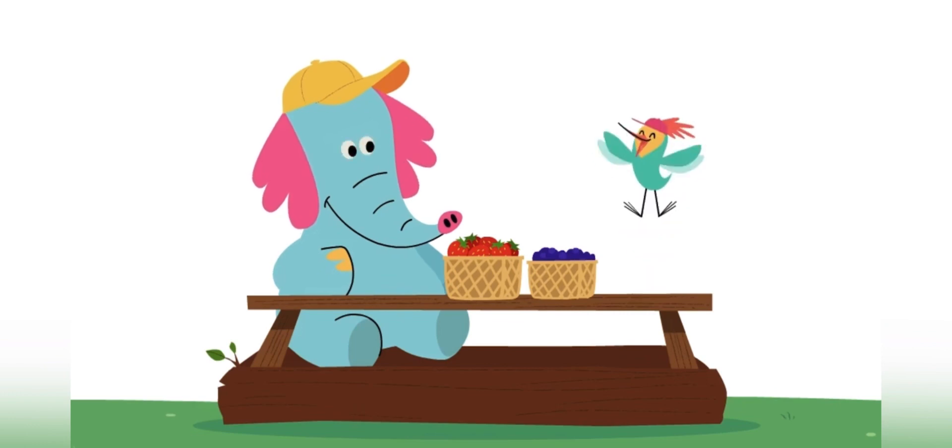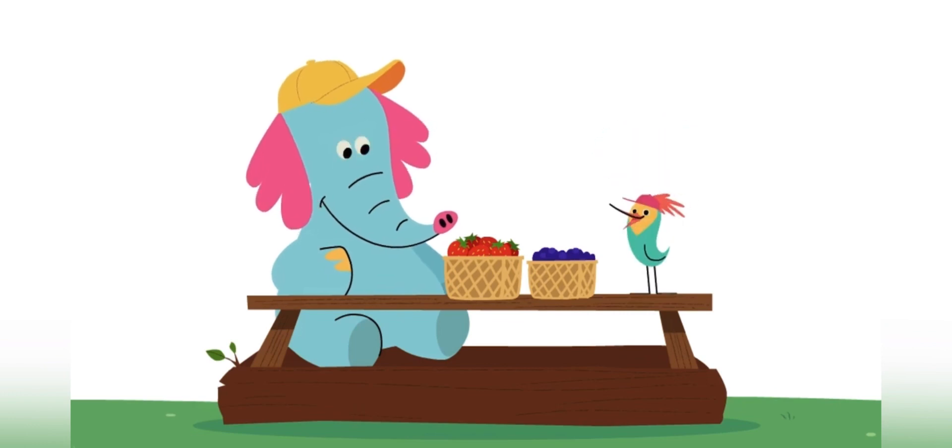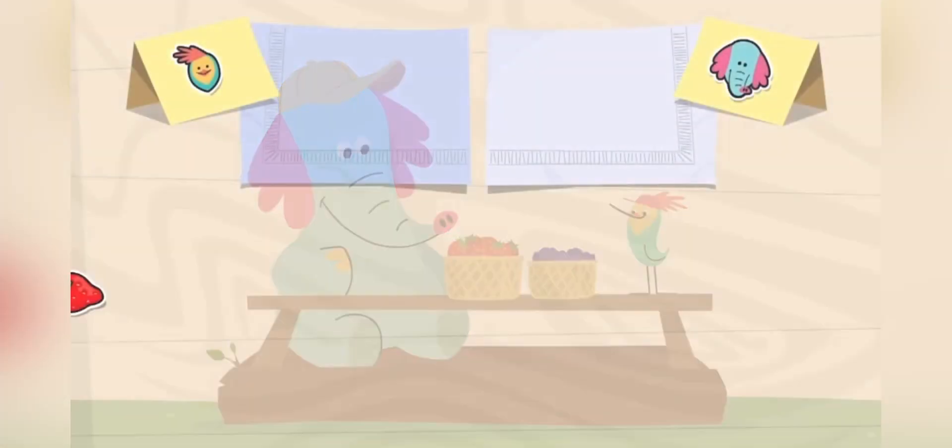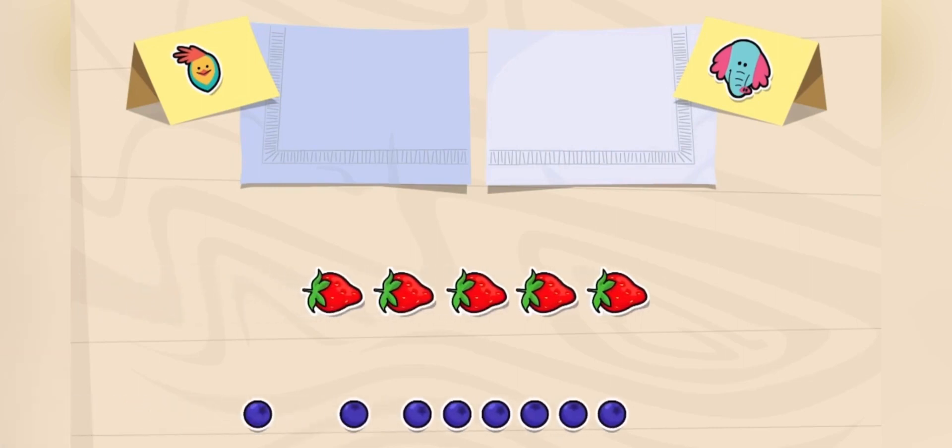We have a very mysterious problem to solve. We have two different types of fruit: five strawberries and eight blueberries.